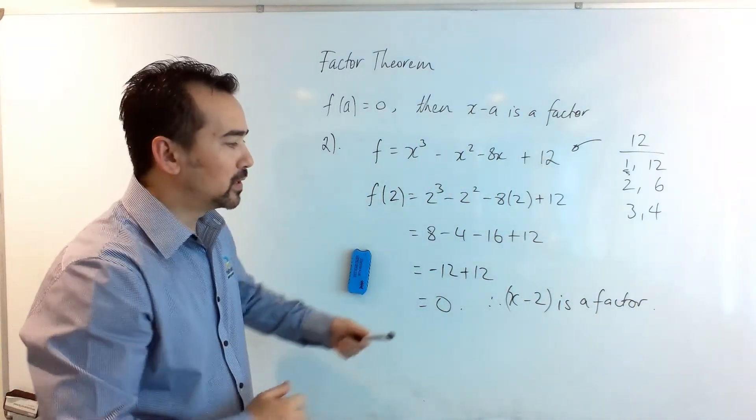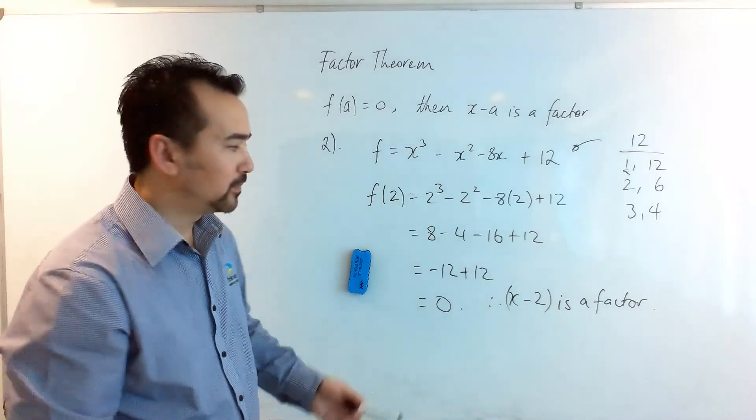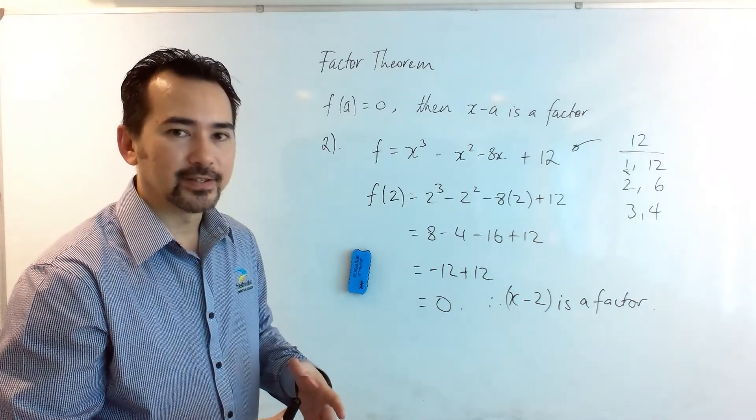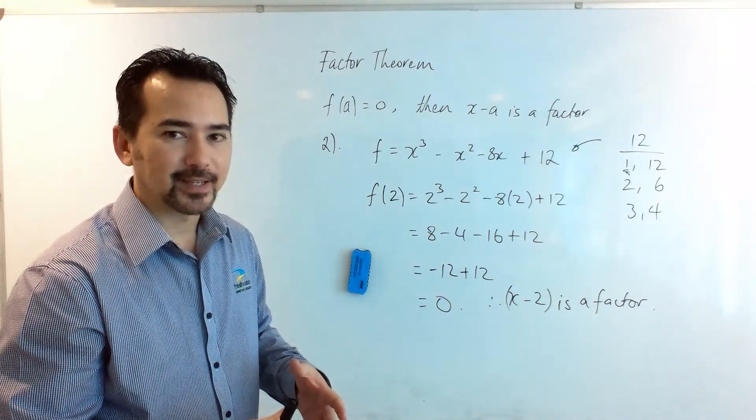So once we have found one factor or one root, the next will fall over like dominoes using synthetic division. That's coming up next.